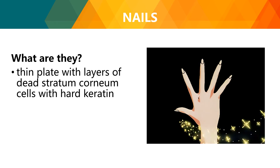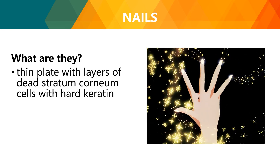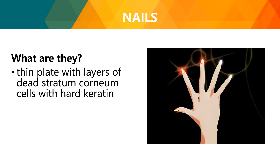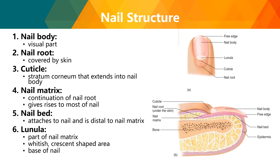Next, nails. They are thin plates with layers of dead stratum corneum cells and hard keratin. Nail structures include: the nail body, which is the visible part; the nail root, covered by skin; the cuticle, which is the stratum corneum that extends into the nail body; the nail matrix, the continuation of the nail root that gives rise to most of the nail; the nail bed, which attaches to the nail distal to the matrix; and the lunula, the whitish crescent-shaped area at the base. Nail appearance can also reflect health conditions.